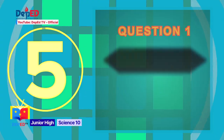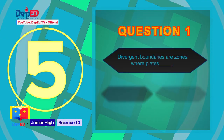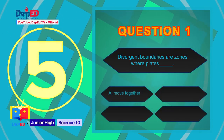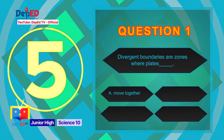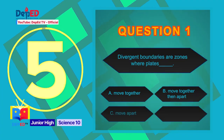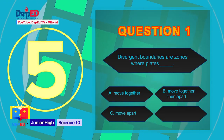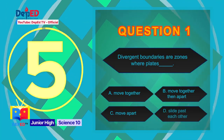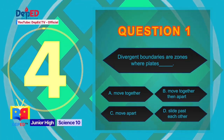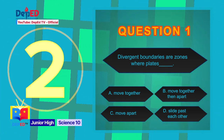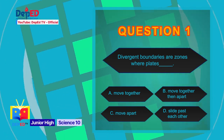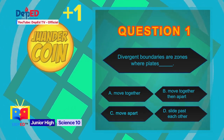Question number 1: Divergent boundaries are zones where plates — A) move together, B) move together then apart, C) move apart, or D) slide past each other. The correct answer is letter C: move apart.